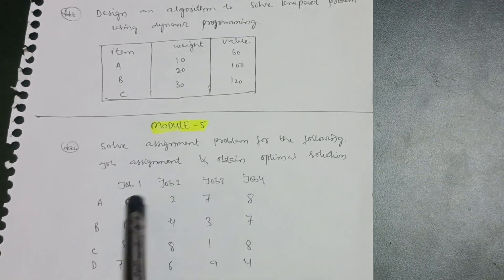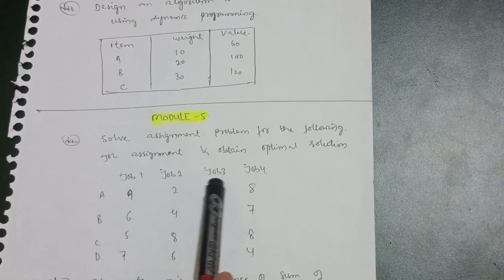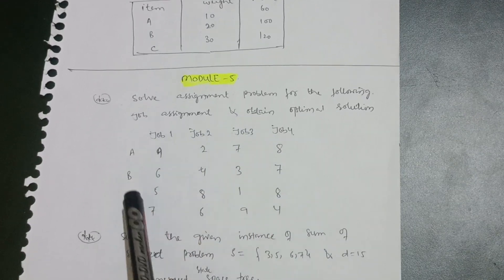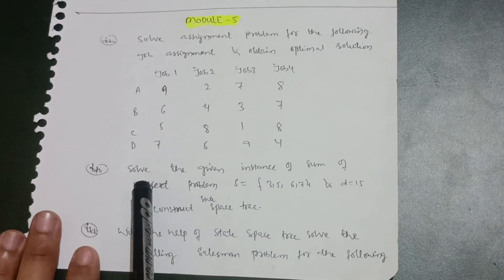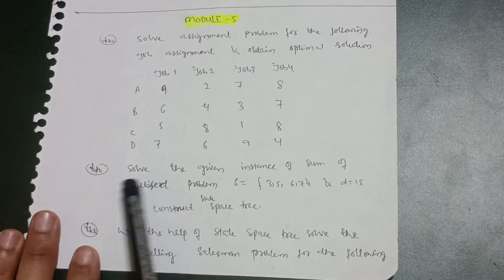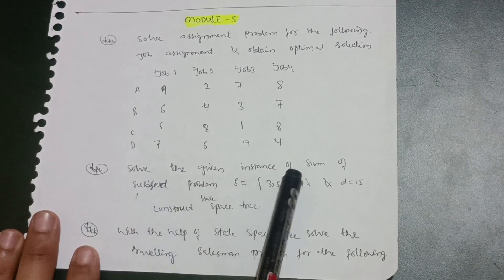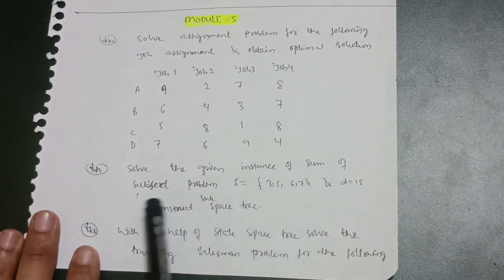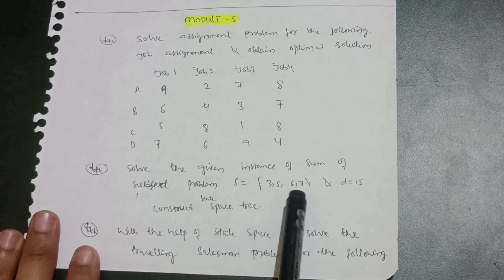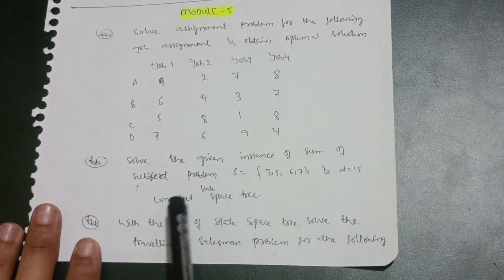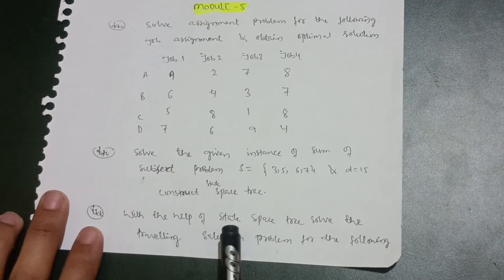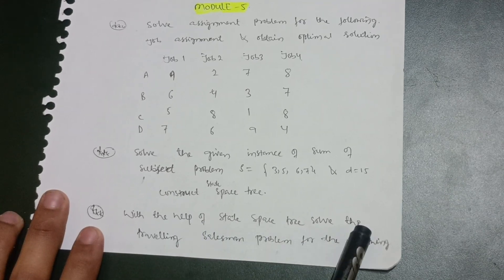Module 5: solve the assignment problem for a given job matrix and obtain the optimal solution. Next important question: solve the given instance of the sum of subsets problem where S = {3, 5, 6, 7} and d = 15 — construct a state space tree.